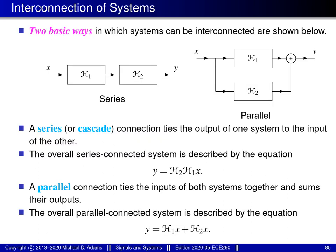Often when we have more than one system we'd like to be able to interconnect systems in some way. There are two very basic ways in which we can interconnect systems: what's known as a series or cascade interconnection and what's known as a parallel interconnection.